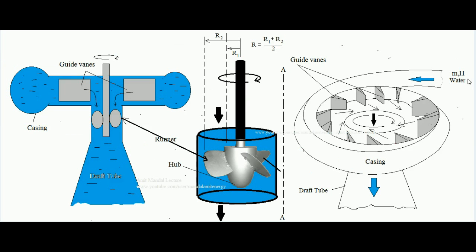This is the detailed diagram of the Kaplan turbine. You can see water coming from the penstock first reaches the casing. After the casing, water passes through the guide blades. The guide blades direct the water at a particular angle so that it develops a whirl — a rotational motion — in the water. Ultimately the water reaches the center and falls in an axially downward direction.